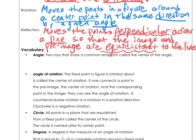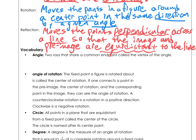Now, some vocabulary we've been using — just to make sure we're all on the same page. We've talked about angles. Angles are rays that share an endpoint. Rays go on forever in one direction. We can name an angle by its vertex — so this is the vertex here, and we can call this angle A.